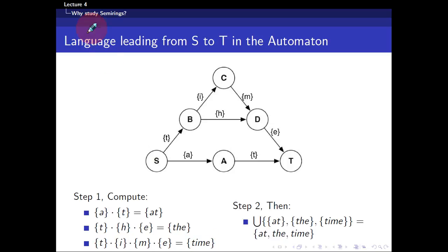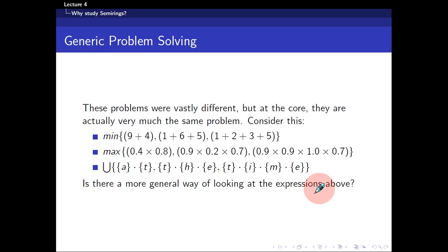But I want to find all possible languages leading from S to T. So what do I do? The second step is just to take the union. I consider the three paths and I take the union, and then I create a set of three objects: at, the, and time. This would give me the language, all the possible languages starting from S to T. Now these problems are very different: shortest distance, possible languages, maximum reliability. But you realize at the core they are actually very much the same problem.